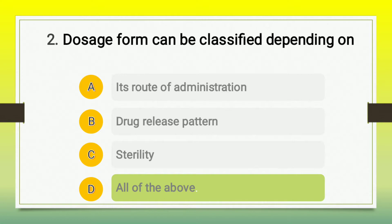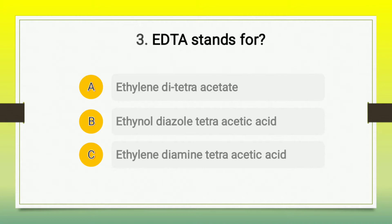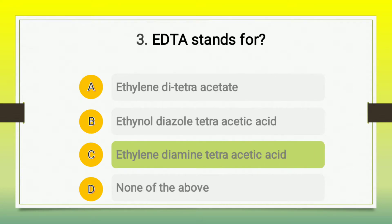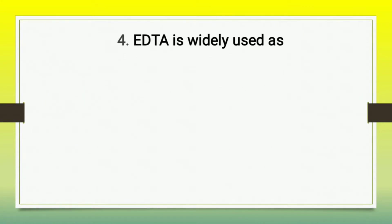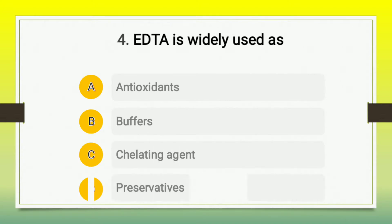Moving to the next question: EDTA stands for — A) ethylene di tetra acetate, B) ethanol diazol tetra acetic acid, C) ethylene diamine tetra acetic acid, D) none of the above. The right answer is option C, ethylene diamine tetra acetic acid. Then the next question also on EDTA: EDTA is widely used as — A) antioxidant, B) buffers, C) chelating agents, D) preservative. The correct answer is C, chelating agent.